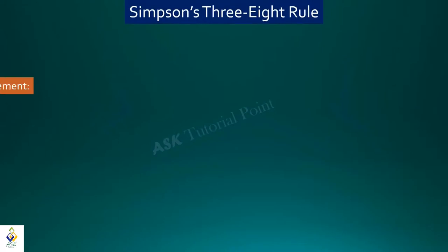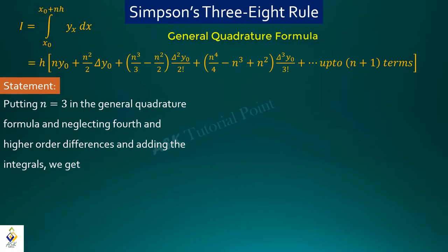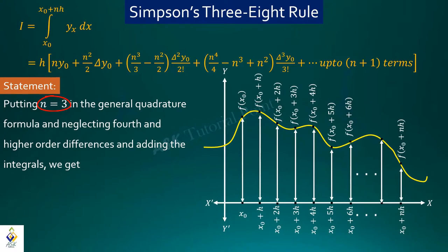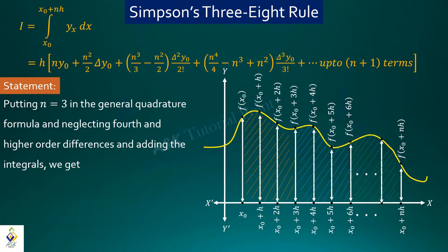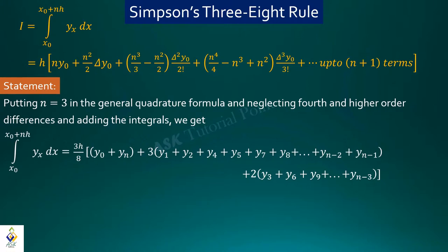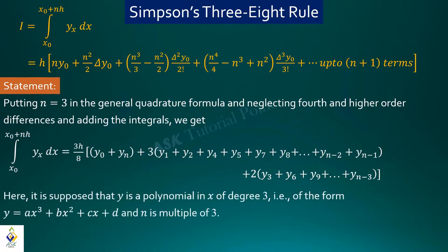For Simpson's 3/8 rule, we put n = 3 in the general quadrature formula and ignore fourth and higher order differences. When n = 3, the interval size is 3, covering x₀ to x₀+3h, then x₀+3h to x₀+6h, and so on. Adding these integrals gives the Simpson's 3/8 rule formula. Here we assume that the function is a 3rd-degree polynomial in x, i.e., of the form y = ax³ + bx² + cx + d, and n is a multiple of 3.